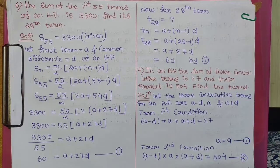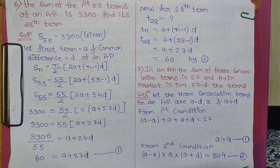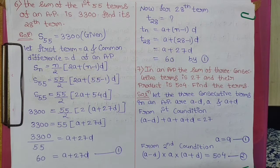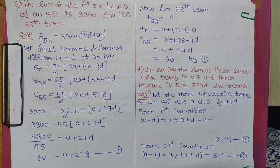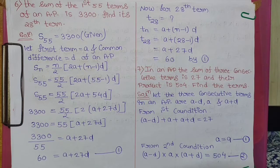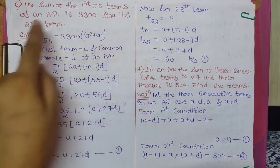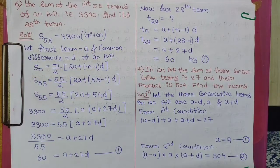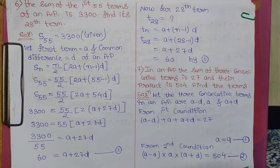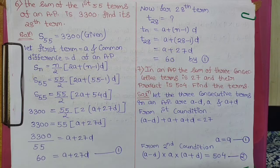Question number 6: The sum of the first 55 terms of an AP (Arithmetic Progression) is 3300. Find its 28th term. So in this question, S55 is given as 3300, and you have to find the 28th term — that is, you have to calculate the value of T28.